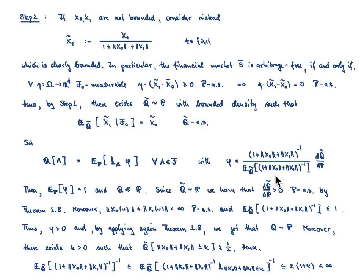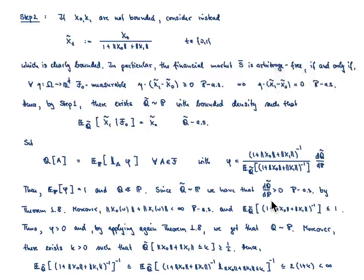This is a linear system with k unknowns and two equations. If k equals 2, the solution is unique. If k is larger than 2 and a solution exists, there will be infinitely many solutions. The message of this example is that even if the set of equivalent martingale measures is non-empty, it may contain infinitely many elements — uniqueness is nowhere claimed in the theorem.